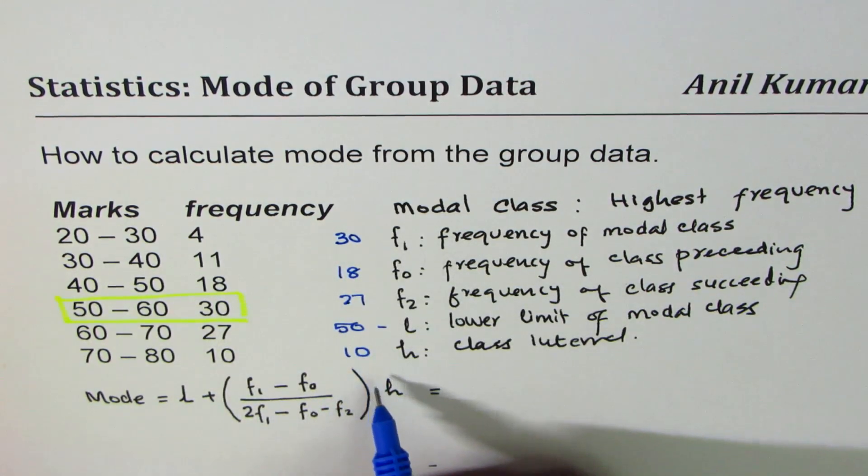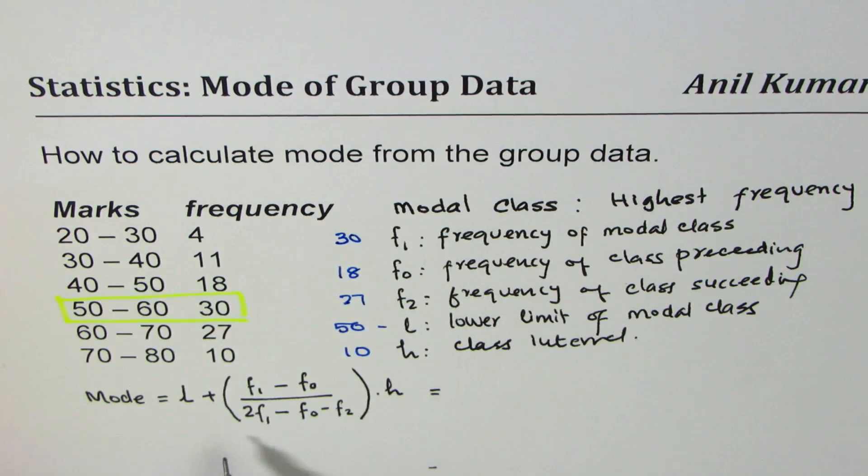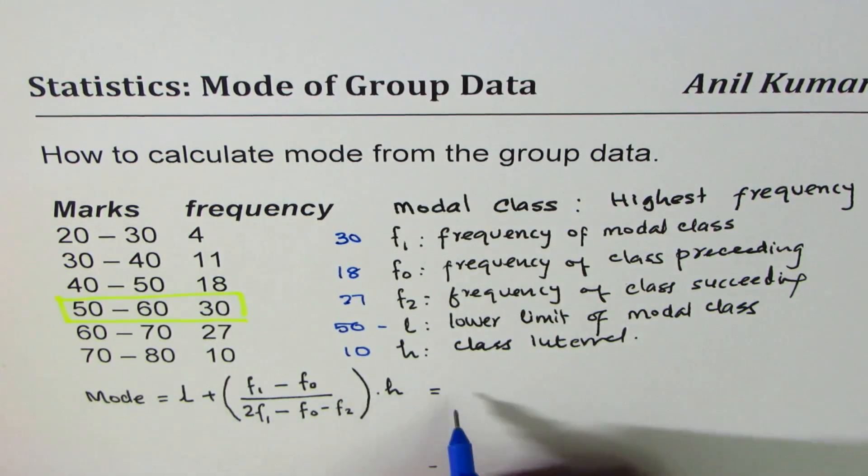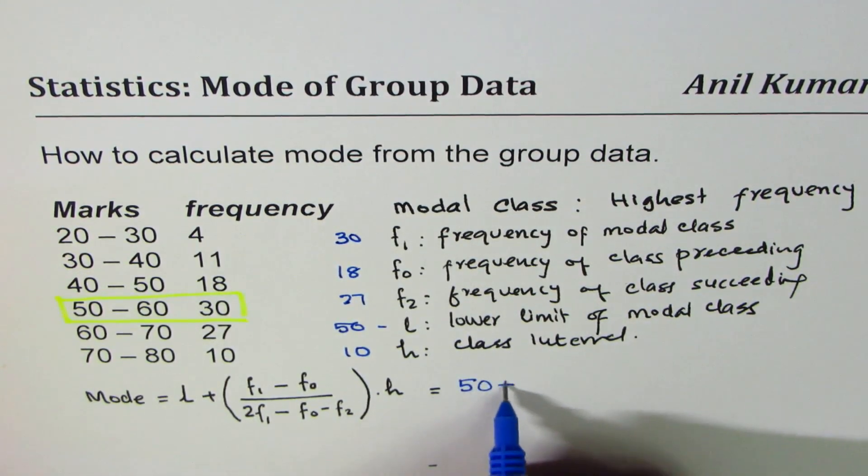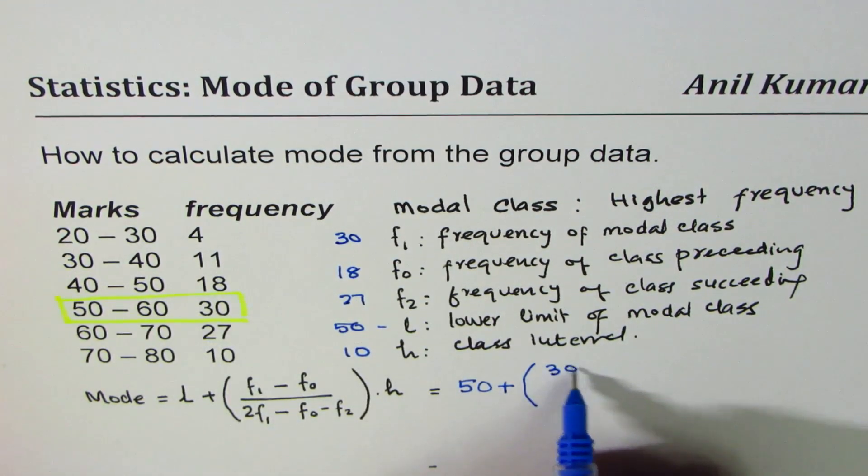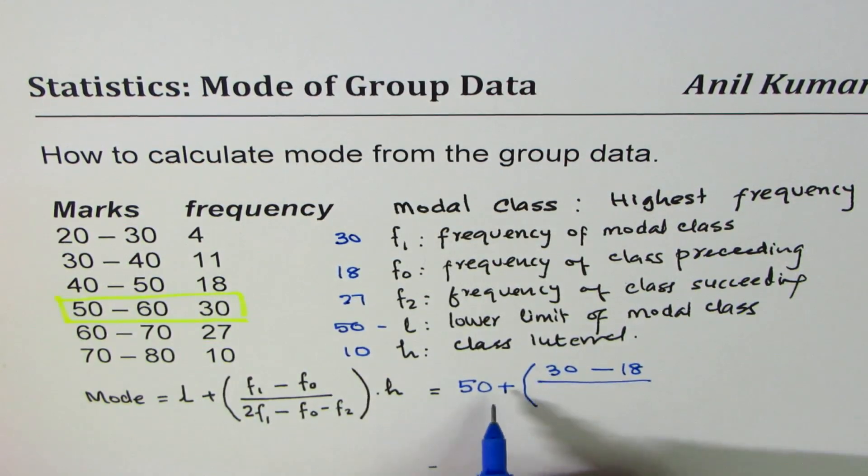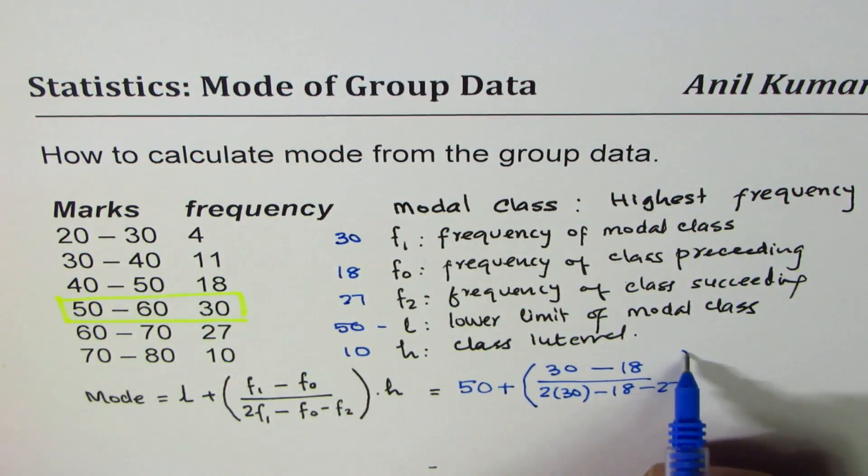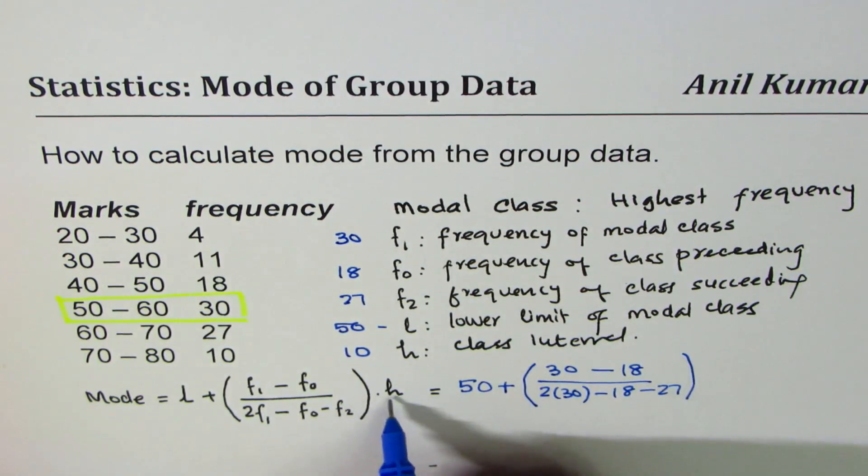Substituting these values and calculating, we should get mode. So we'll write 50 plus within brackets f1 is 30 take away 18, divided by 2 times 30 take away 18 and 27, and multiply this by H which is 10.